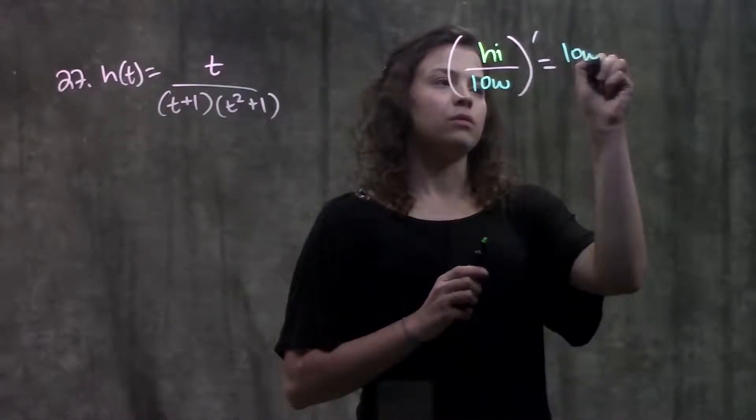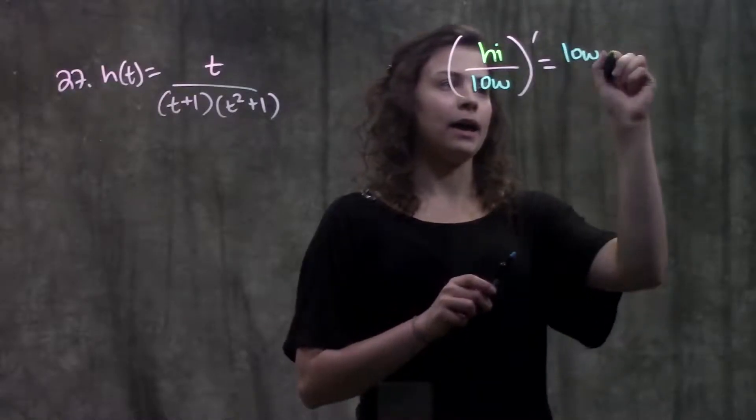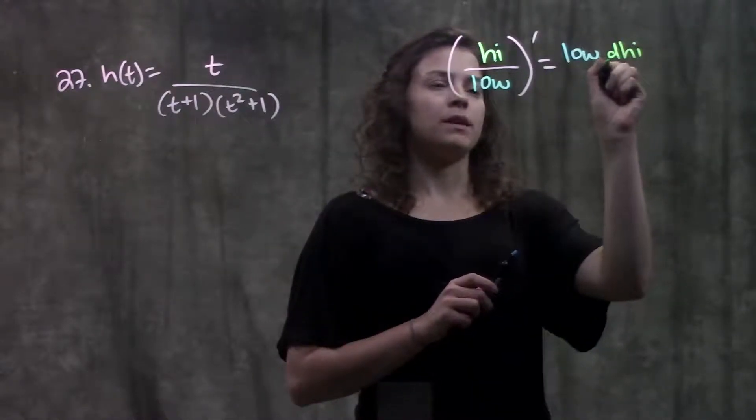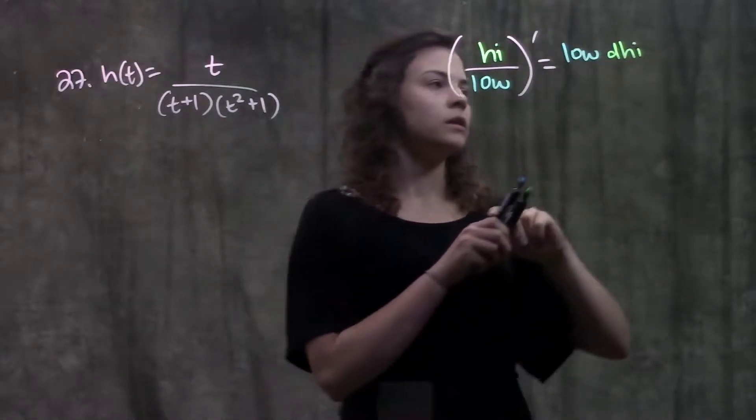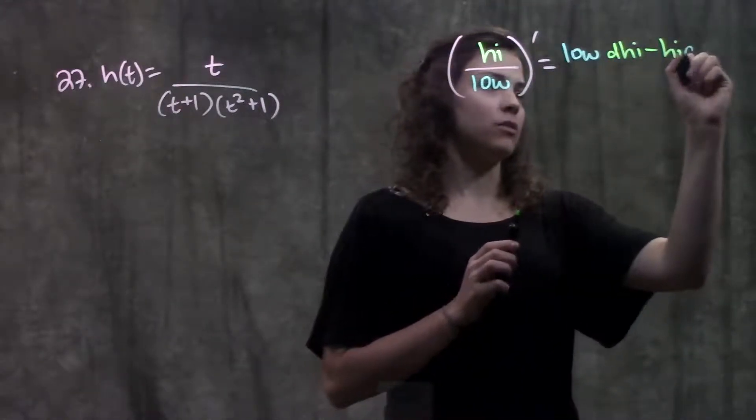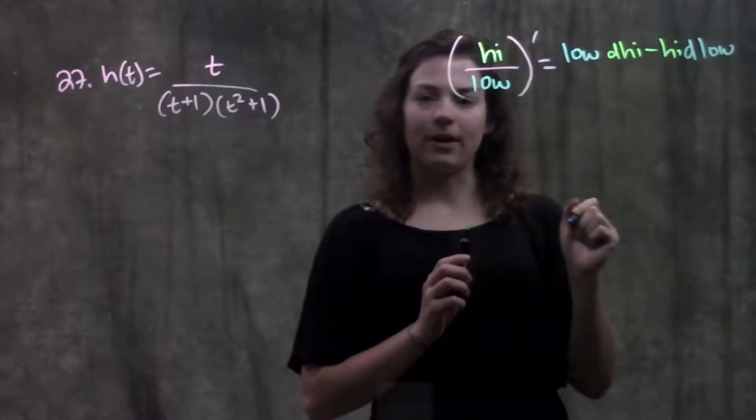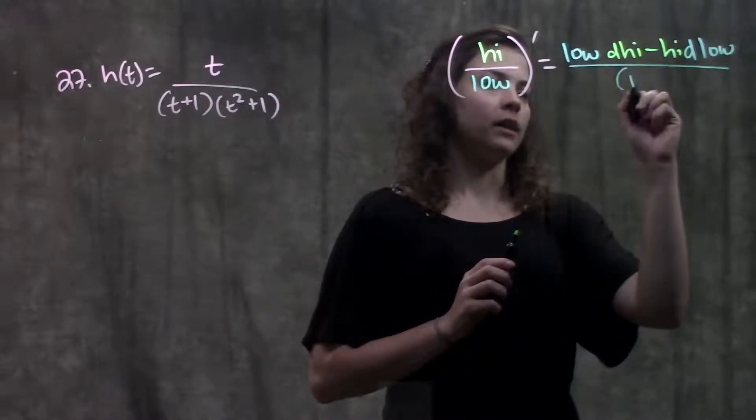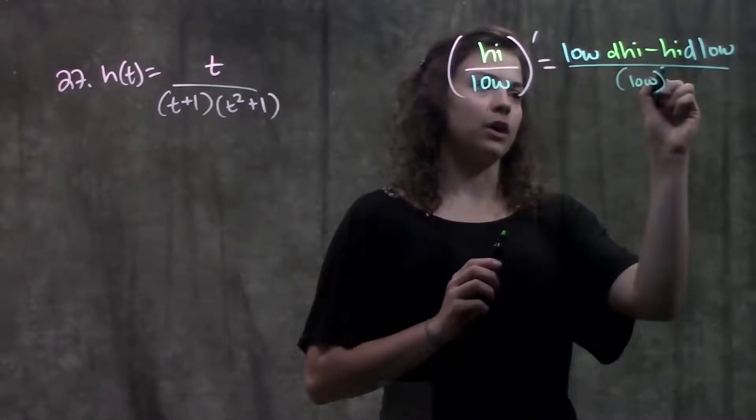So quotient rule tells us that the pattern is, for the derivative we go low times d high, meaning the derivative of the high of the numerator, minus my high, my numerator, times d low, derivative of the denominator. And all of that is over low, the entire low, squared.